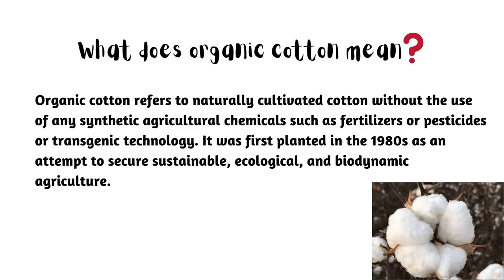What does organic cotton mean? Organic cotton refers to naturally cultivated cotton without the use of any synthetic agricultural chemicals such as fertilizers or pesticides, or transgenic technology. It was first planted in the 1980s as an attempt to secure sustainable, ecological, and biodynamic agriculture.